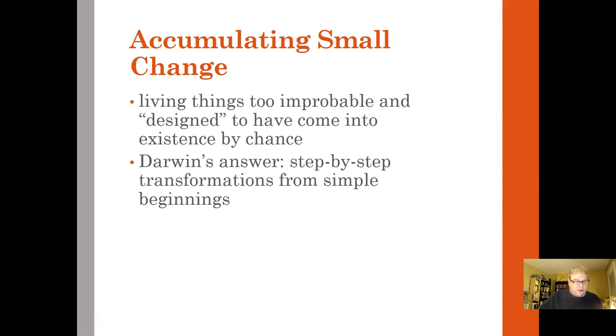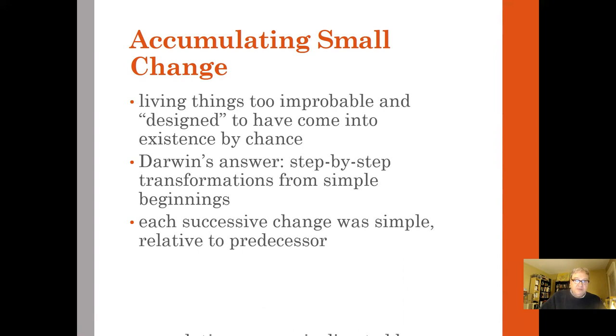Darwin's answer is that it came about through step-by-step transformations from simple beginnings, so that each successive change was simple enough relative to its predecessor to have arisen by chance. The cumulative process is directed by non-random survival.